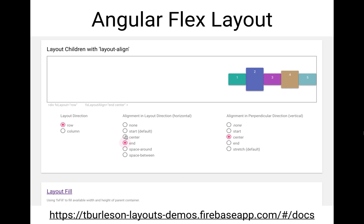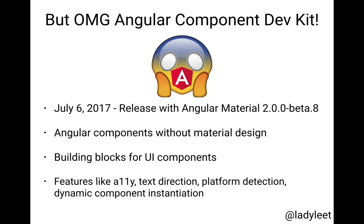Also, I want to talk about the Angular Component Dev Kit. On July 6, 2017, with the release of Angular Material 2 Beta 8, the Component Dev Kit was released. What it is are Angular components without the material design, which allow for building blocks for UI components. This is amazing because you don't need the material design styling, but you can still take advantage of these components — like the new data table — and get features automatically like accessibility, text direction, platform detection, and dynamic component instantiation. There's a lot more coming with Angular Material, so be on the lookout.